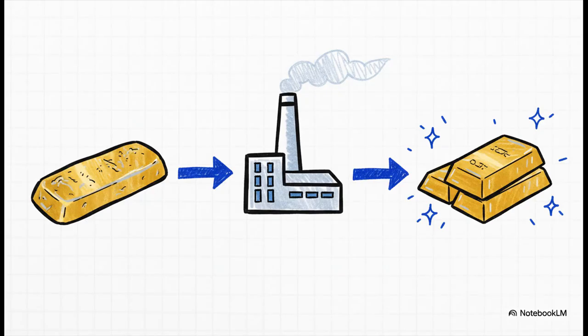And what about our beautiful dory bar? Well, even at 95% purity, it still has one final stop on its journey. It's shipped off to a specialized refinery where the last bits of silver and other impurities are removed, purifying it to that 99.99% standard we see in investment-grade gold bullion.